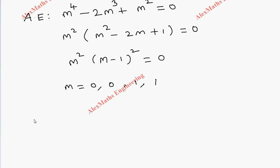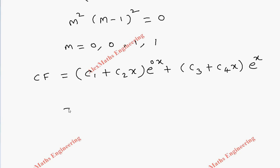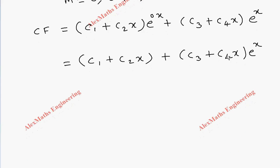For this, the complementary function is going to be (c₁ + c₂x)e^(0x) and (c₃ + c₄x)e^(1x). Since e^(0x) = 1, the CF simplifies to c₁ + c₂x + (c₃ + c₄x)eˣ.